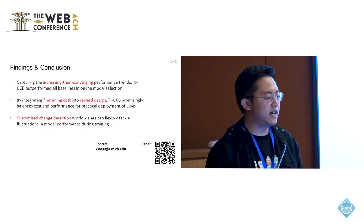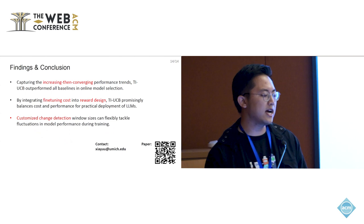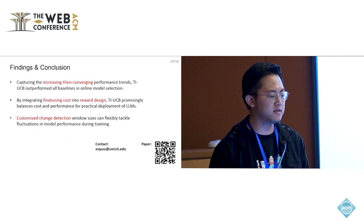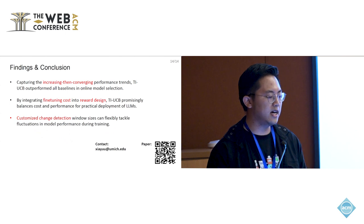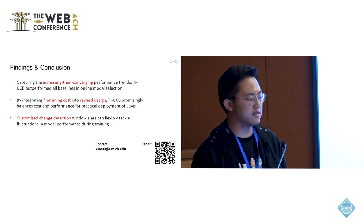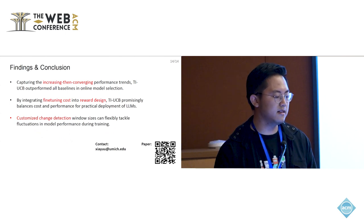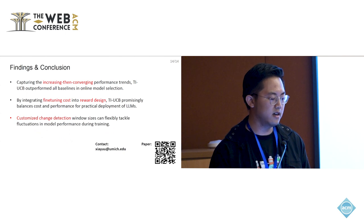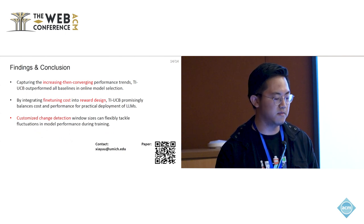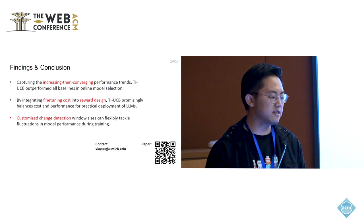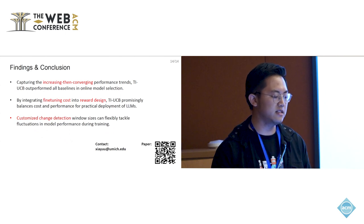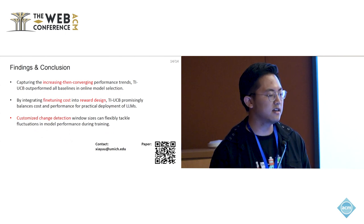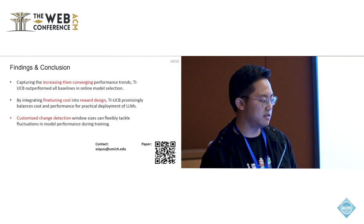Here are our findings and conclusions. By capturing the increasing then converging performance trends, our algorithm outperforms all baselines in online model selection. By integrating fine-tuning cost into reward design, our algorithm can promisingly balance the cost and performance for practical deployment of large language models. By customized change detection window size, we can also flexibly tackle the fluctuations in model performance during training. And that's it for our presentation. Thank you.